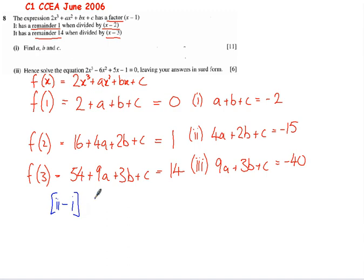Let's see what happens. So 4a - a is 3a. 2b - b is 1b plus b. The c's cancel out. Now be slightly careful here. -15 subtract -2 is -15 + 2, which is -13.